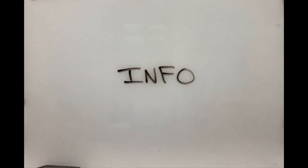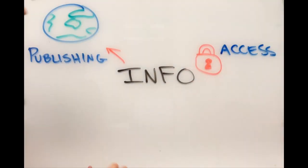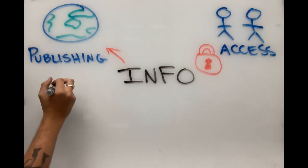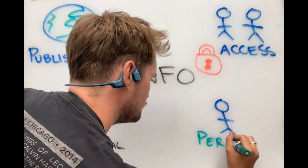The value of information is created in many different ways, including through publishing practices, access to information, the commodification of personal information, and intellectual property laws.